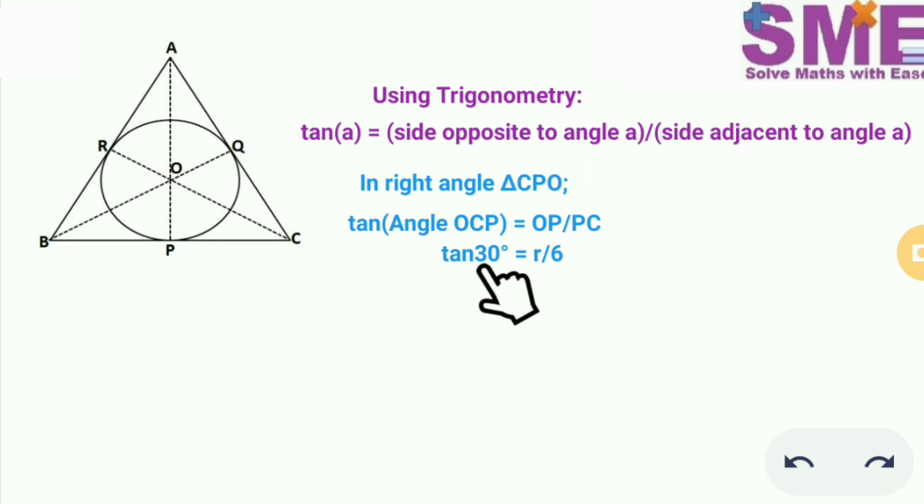Tan of 30 degree is equal to OP is equal to r and PC is equal to 6 because PC is half of BC. So half of 12 is equal to 6.